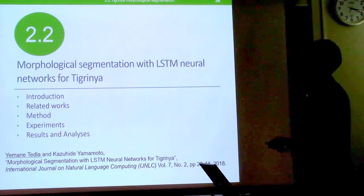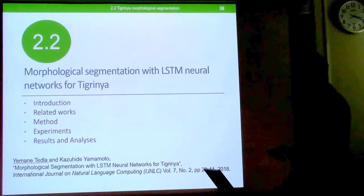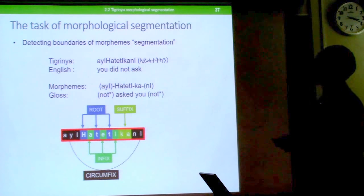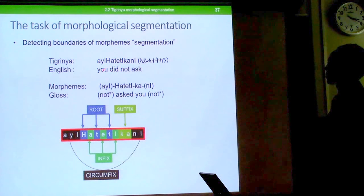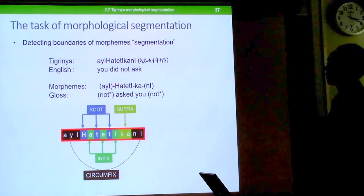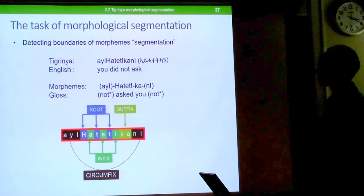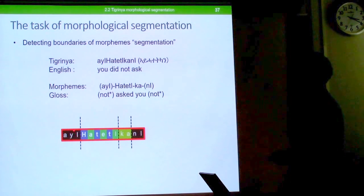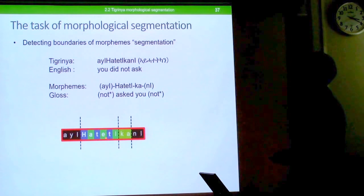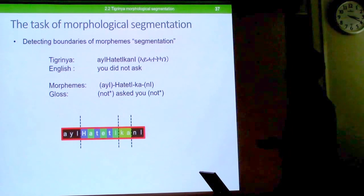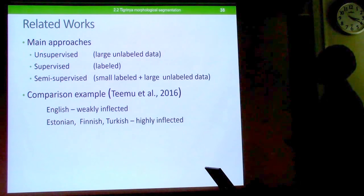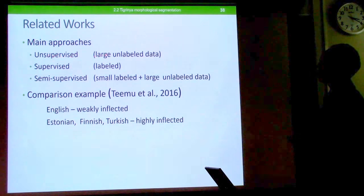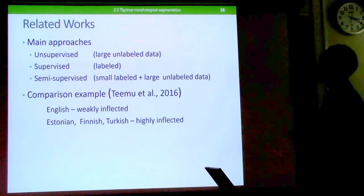The second experiment covers morphological segmentation with LSTM neural networks for Tigrinya. Morphological segmentation is the task of detecting boundaries of morphemes — for example, finding prefix-to-stem and stem-to-suffix boundaries within a word like 'you did not ask.' Related work includes unsupervised approaches using large unlabeled data, supervised approaches using labeled boundary data, and semi-supervised approaches combining small labeled with large unlabeled data.